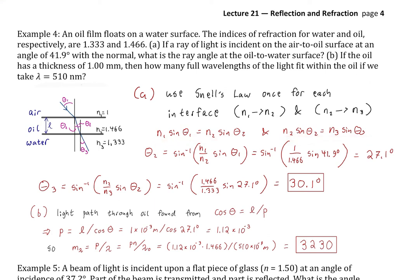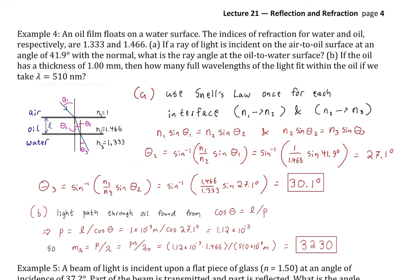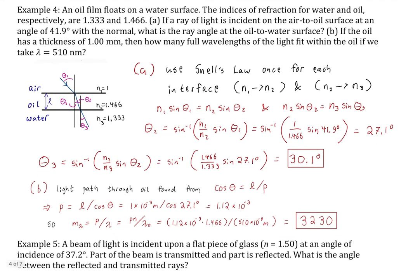Solving for theta two using Snell's law from air to oil — with known indices and theta one — we find theta two equals 27.1 degrees. Then feeding that forward into the second Snell's law expression with only theta three as the unknown, we get 30.1 degrees. This makes sense: there was a more dramatic decrease going from air to oil, and then a slight increase going from oil to water — from higher to lower index of refraction — but only about three degrees, so the overall effect is still a decrease.